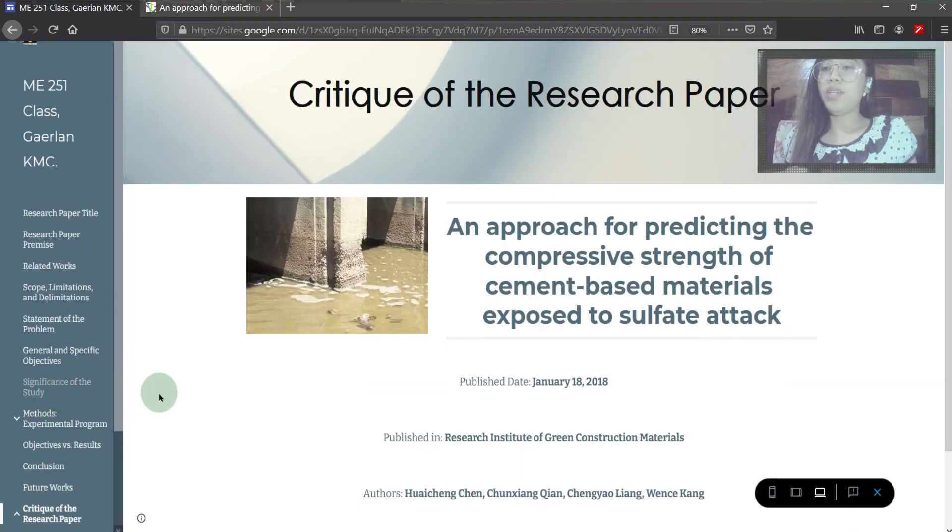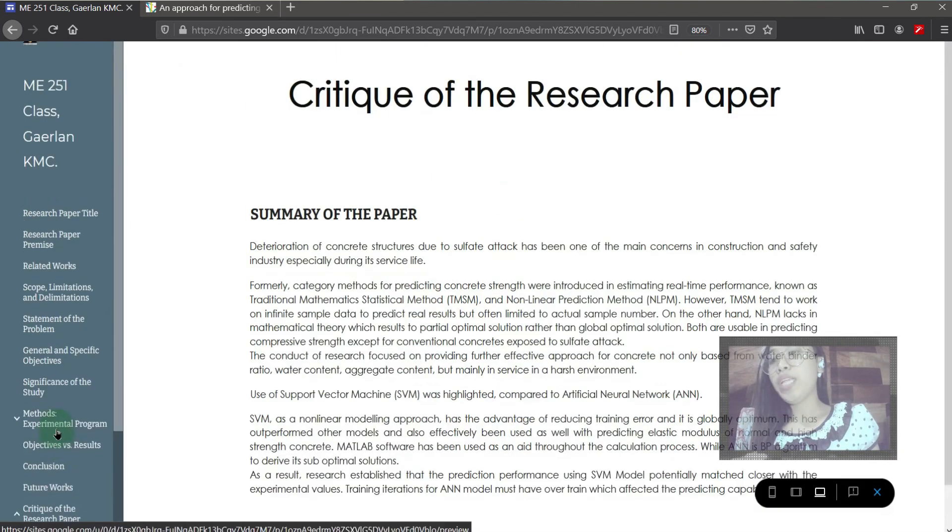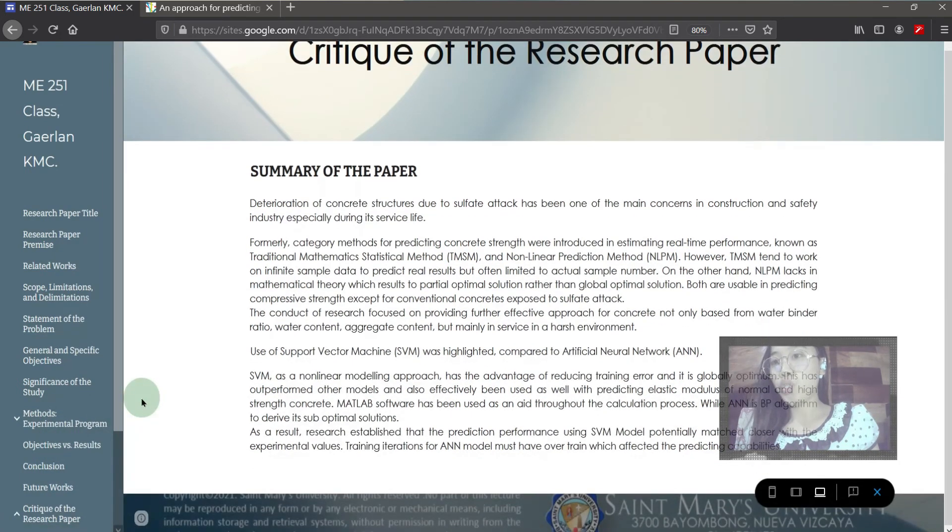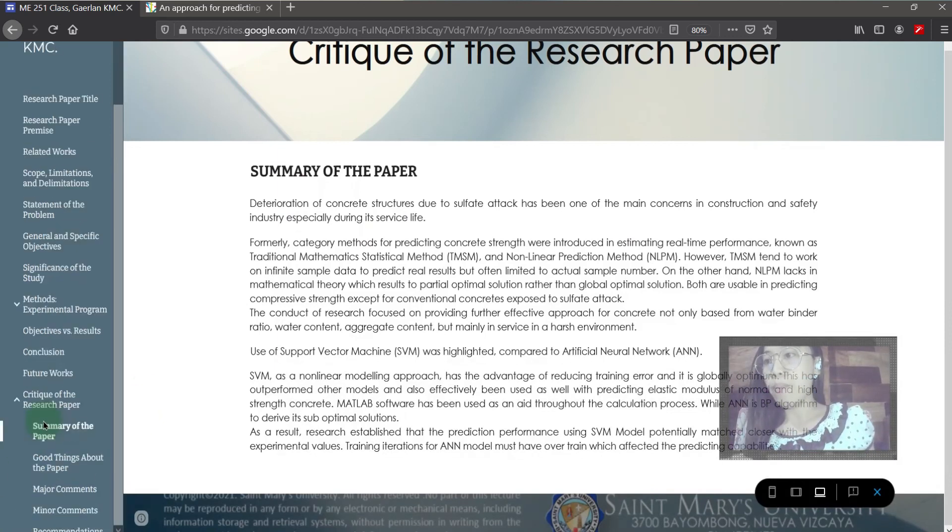For further discussion and summary of the study, included here is the critique of the research paper. We have here the summary reiterating the deterioration of concrete structures due to sulfate effects, and the methods that will help us predict the compressive strength. Discussed here are the two categories, TMSM and NLPM, but these can't gain potential for predicting strength when exposed to harsh environments. Therefore, this leads to the use of artificial intelligence. However, the study also shows that ANN have limits, so research proceeds to investigate in another way using SVM. Then, results show favorable values that its prediction potential match well with the experimentals.